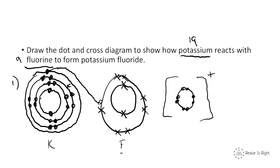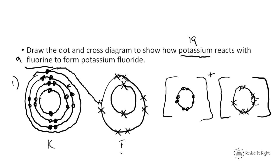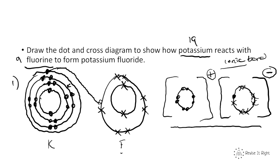Now we draw fluorine gaining that electron. Fluorine has 7 electrons in its outer shell, drawn as crosses. The 1 electron that came from potassium is drawn as a dot to show it's a different electron. Fluorine has now become a minus ion. These are now attracted to each other because they're oppositely charged — that is an ionic bond, represented with a dot and cross diagram.